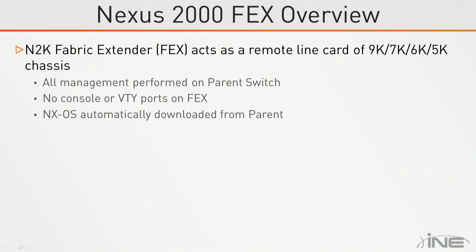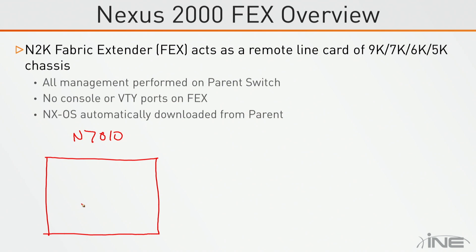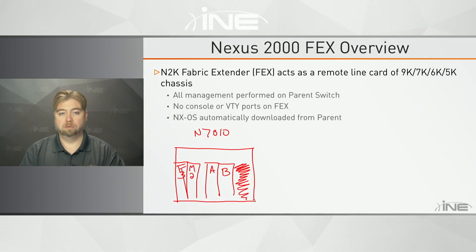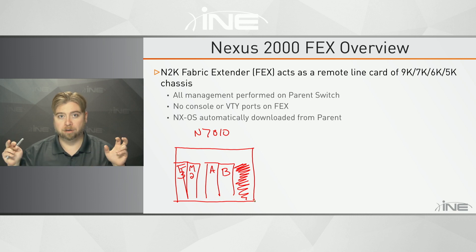The analogy to think about here: consider a normal chassis-based switch like a Nexus 7010. It has two slots for supervisors — supervisor A and supervisor B, active and standby — and then eight slots for individual line cards, such as an F3 card as module one or an M2 card as module two. When you connect these into the chassis, there's physical circuitry on the backplane where the line card plugs into the motherboard, and that's how all the cards communicate over the switch fabric — essentially the traces on the backplane of the physical board.